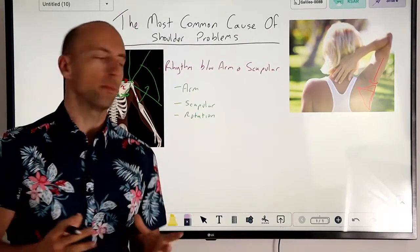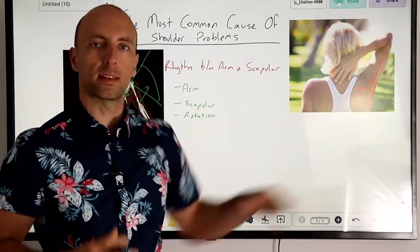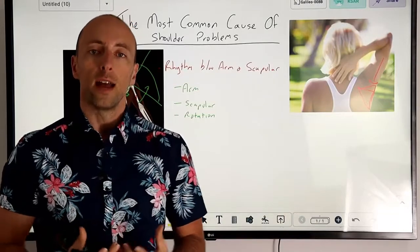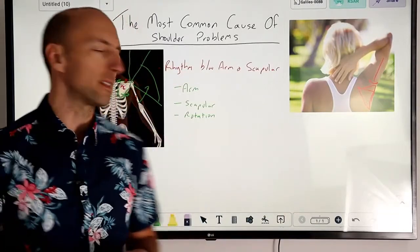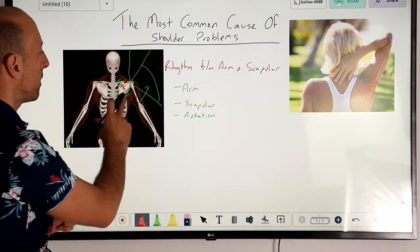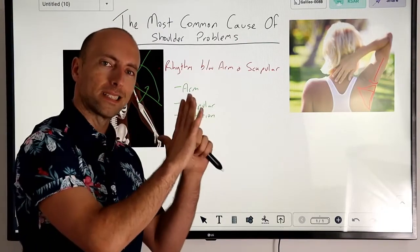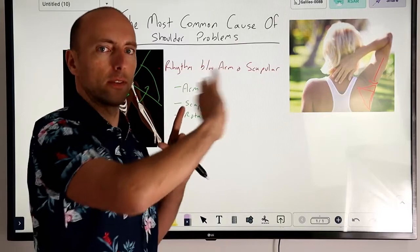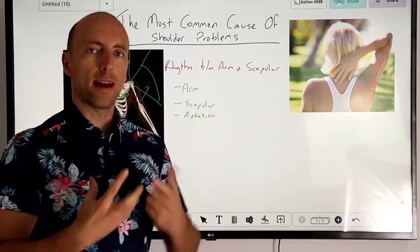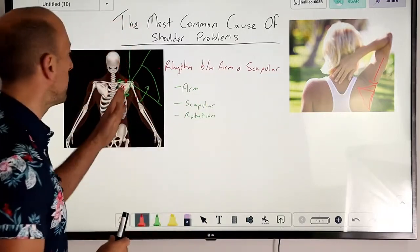The big key thing with this is scapula movement. It's the shoulder blade movement that is really critical, and the reason it is so critical is that if we don't have this firing sequence correctly where the muscles are holding the shoulder blade still and then allowing to give it the right amount of movement, we get problems.